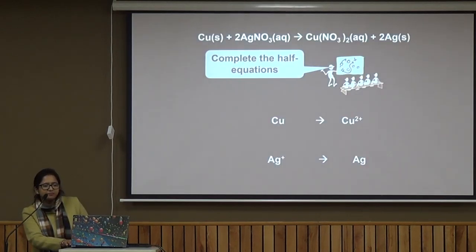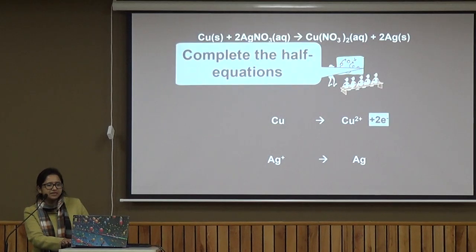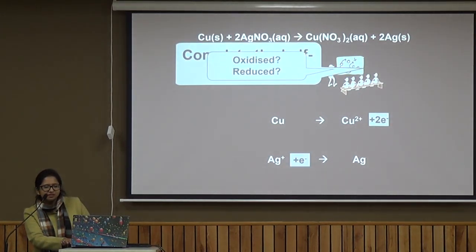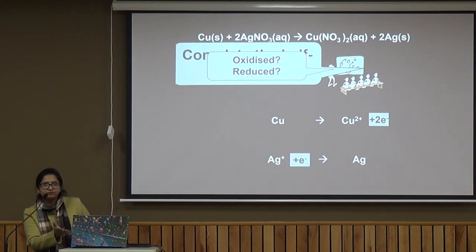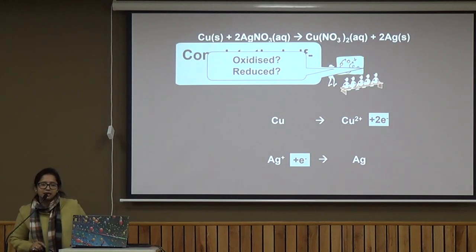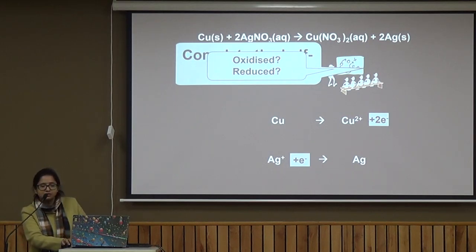Similarly, you can observe the half equations of both reactions. Copper loses electrons — it is oxidized, converting to Cu²⁺. Silver gains electrons — it is reduced, converting from Ag⁺ to elemental silver.